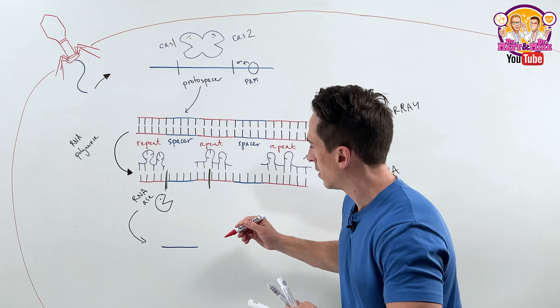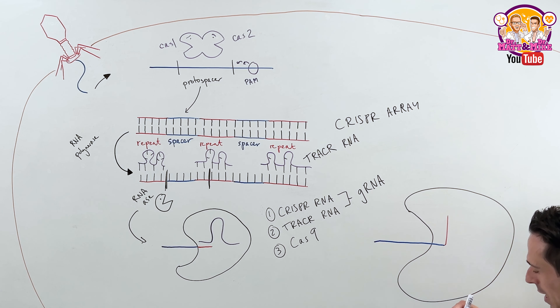Looking at this in a bit more detail: we have the Cas9 protein, with the spacer sticking out, then the repeat, and the tracrRNA bound to the repeat with a tracer tail — so still two separate RNAs. This is where we start thinking about gene editing and gene therapy. Researchers discovered you can actually connect the two together to create a single guide RNA — sgRNA.